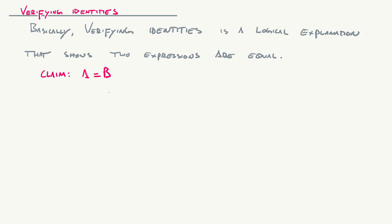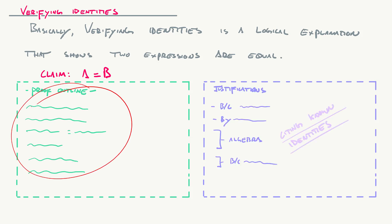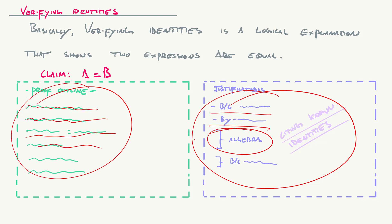It follows a very specific format. You might claim that some expression A is equal to some expression B, and your job is to prove that. I typically put all the mathematics on one side and the justifications on the other — that's the two-column proof outline. In trigonometry, most justifications come either from algebra or from citing known identities like a Pythagorean identity, quotient identity, reciprocal identity, or double angle identity.